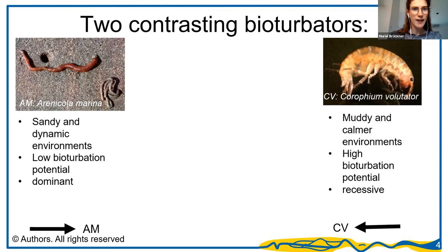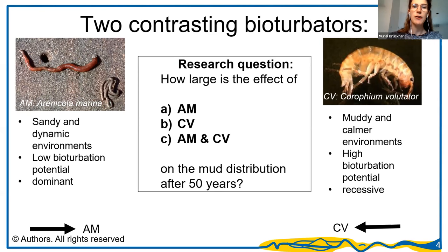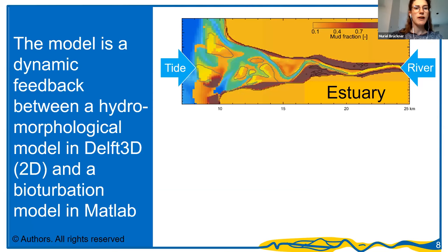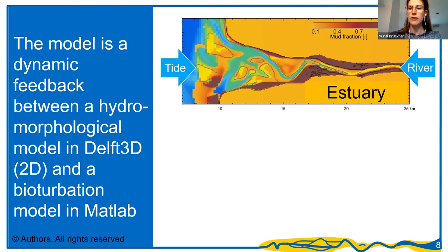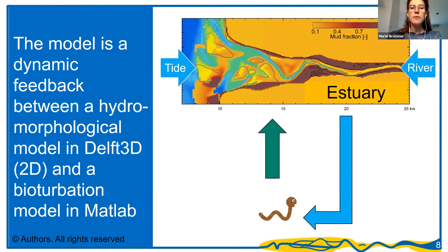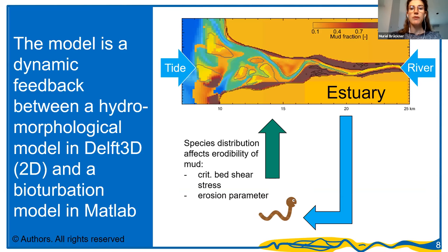My research question is: how large is the effect of each of these species on estuary morphology, and what happens if we combine these species? I look at the mud distribution of an estuary after 50 years of morphological evolution. To do that I use a coupled model consisting of a hydromorphodynamic model in Delft3D Flow and a bioturbation model that I wrote in MATLAB to represent the species. In the top panel you can see my idealized estuarine domain, with tides and the ocean on the left-hand side and the river on the right. I let the morphology evolve with sandbars and mud flats, then couple this domain to my species model so that where species occur they change the erodibility of the mud.